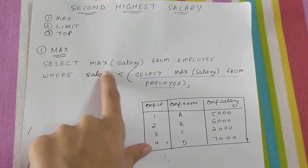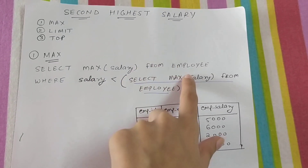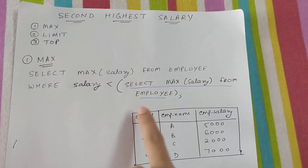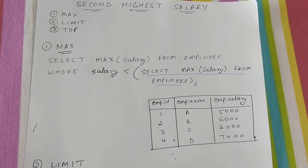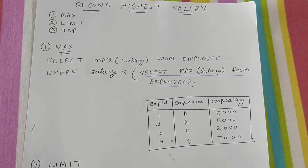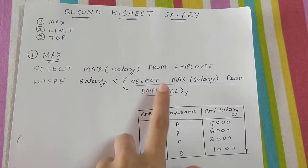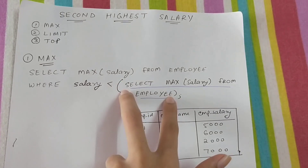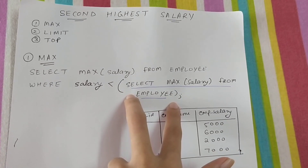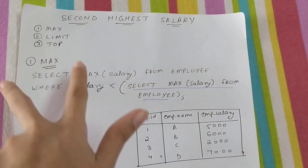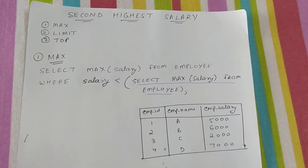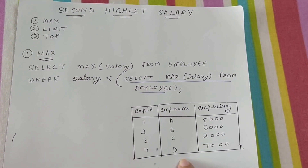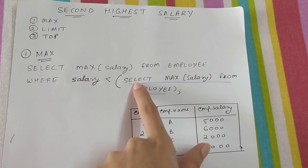The first method uses MAX. The query is: SELECT MAX(salary) FROM employee WHERE salary < (SELECT MAX(salary) FROM employee). One thing we need to understand is that the query inside the brackets is known as an inner query, and it is always executed before the outer query. Let's take an example table.